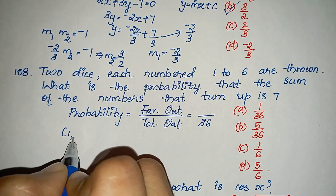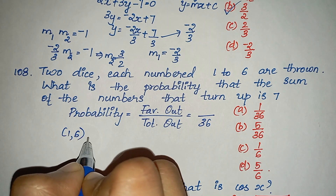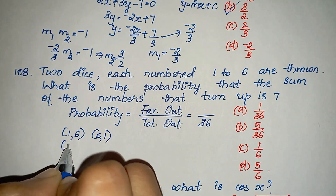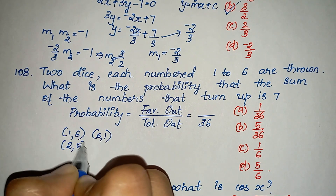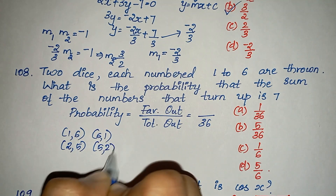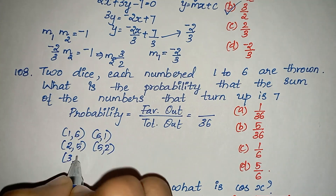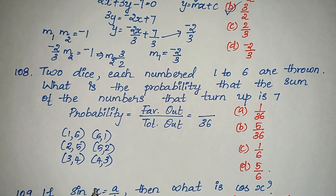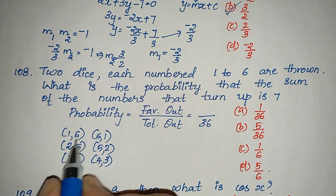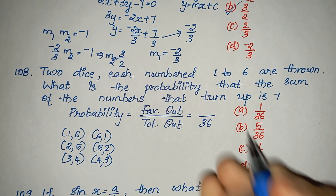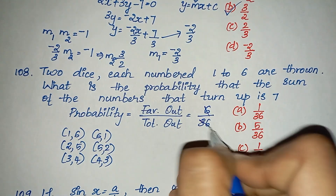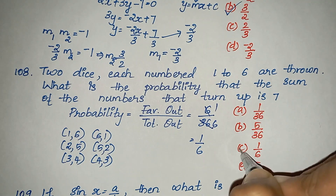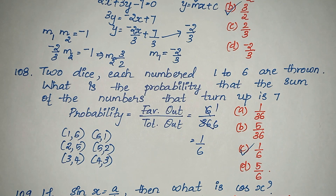To get a sum of 7, the favorable pairs are: (1,6), (2,5), (3,4), (4,3), (5,2), (6,1) — that is 6 favorable outcomes. So the probability is 6 by 36. Option C is the right answer.